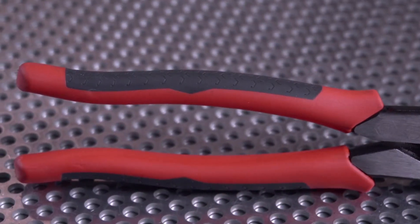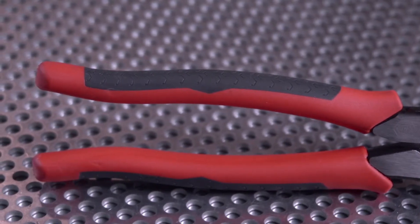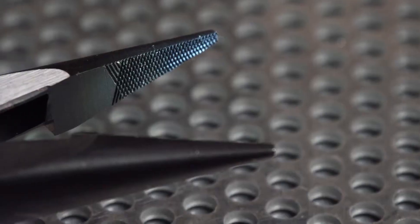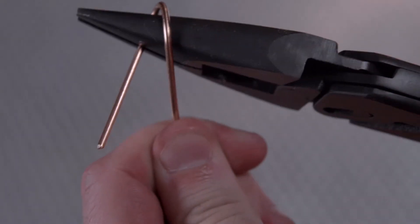Dual material handles add comfort and a non-slip surface. A cross-check pattern on the jaws of the Pivot Pro linesman and long nose pliers provide extra gripping power.